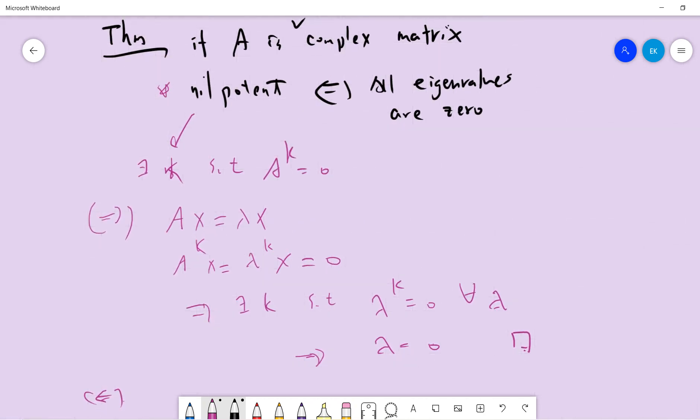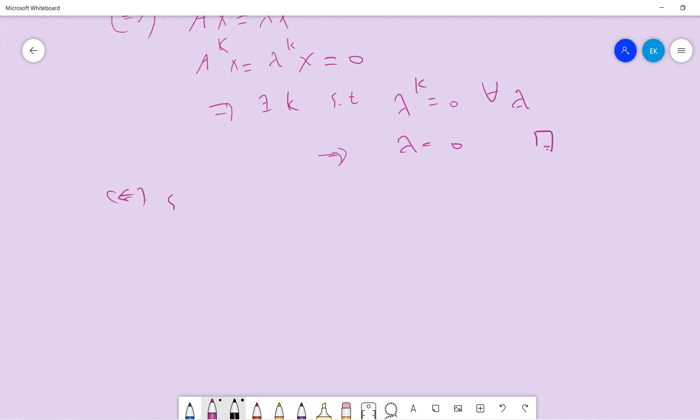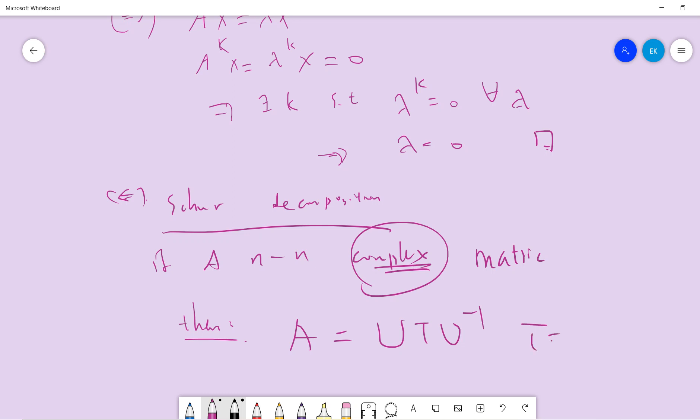And the second way, all eigenvalues are zeros, we need to use a theorem called Schur's decomposition. Basically, if A is n by n complex matrix, the important part is this complex. So if A is a complex matrix, then it can be written as U T U inverse. This T is the upper triangular matrix, and the diagonal part is just the eigenvalue. Yeah, so these are all zeros.